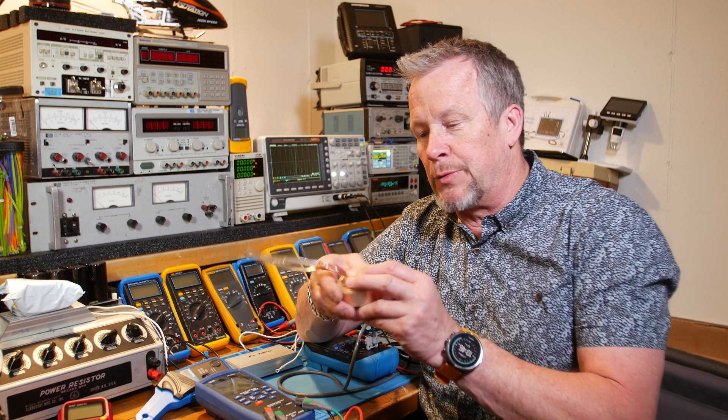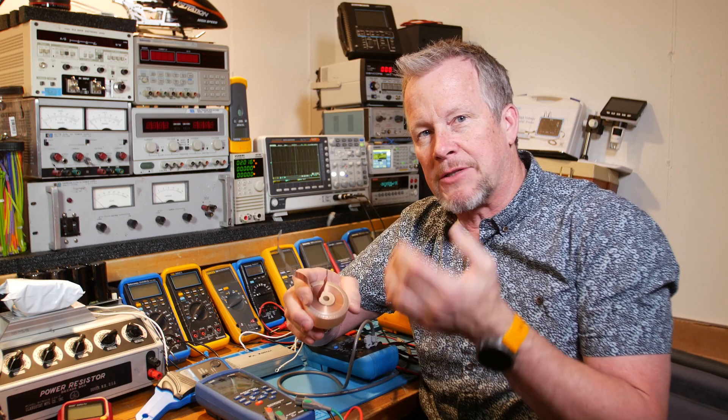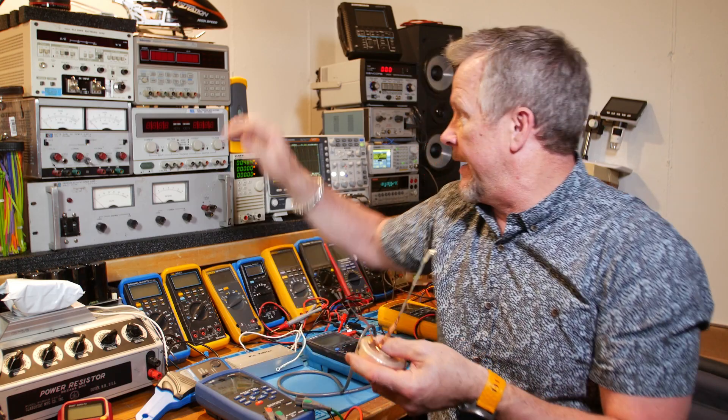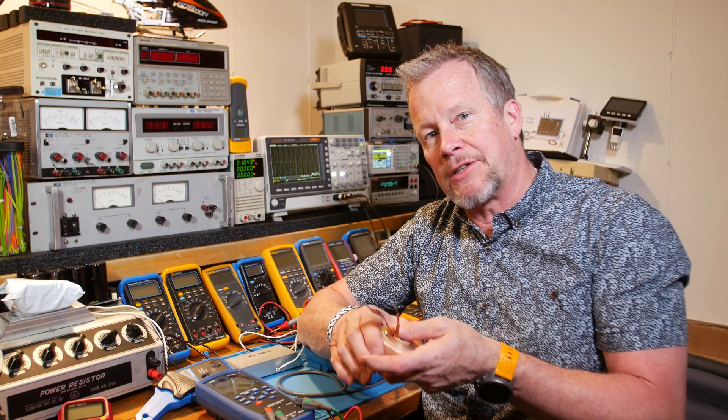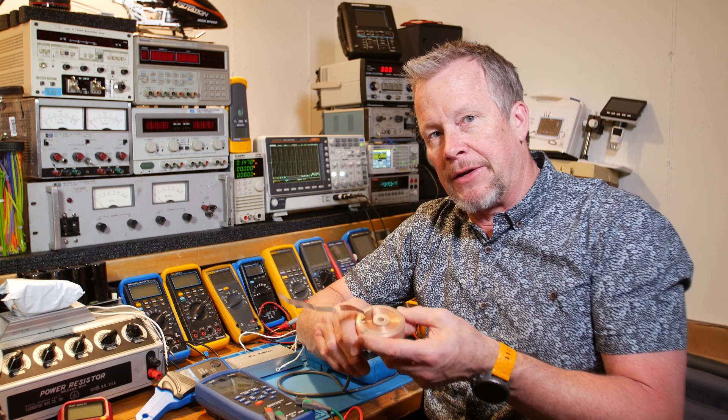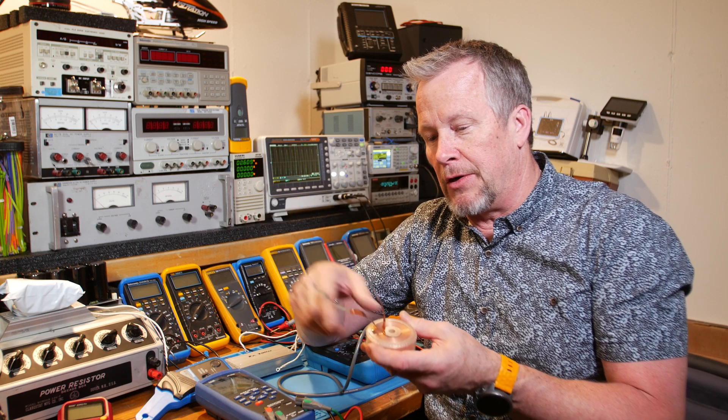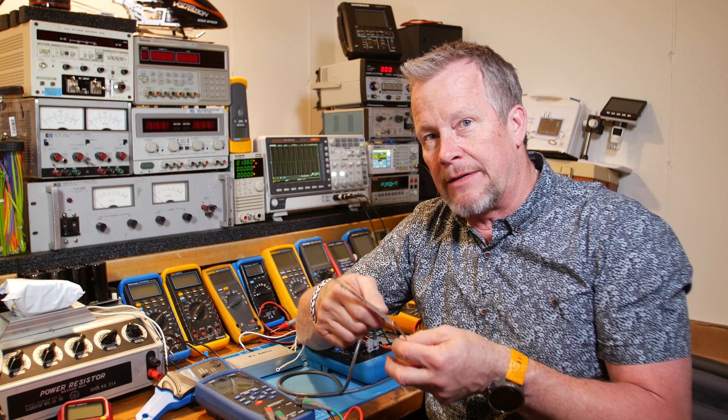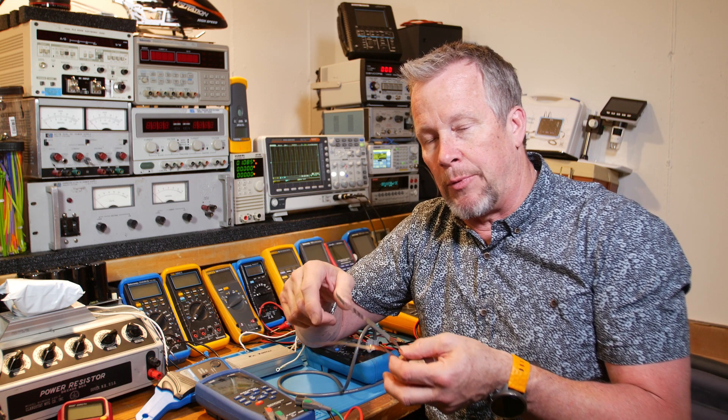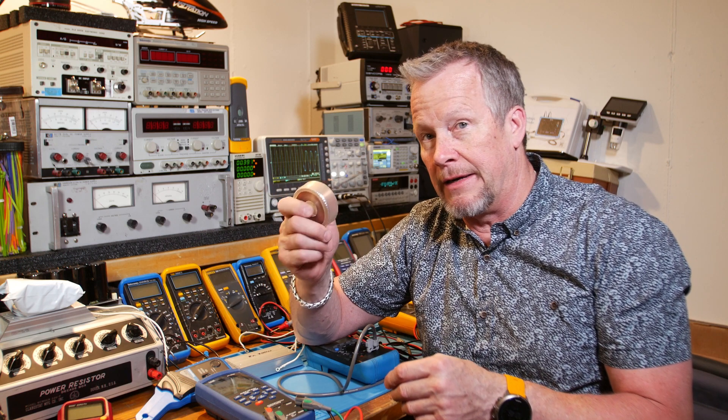Now, in previous videos, we did these RC filters where we either did a high pass or a low pass filter. And I used this guy to sweep the frequency and plot this nice curve. Well, you can do it manually, plotting several points on a curve using this technique. It's really easy and really quick to find the 3 dB point, the roll-off.